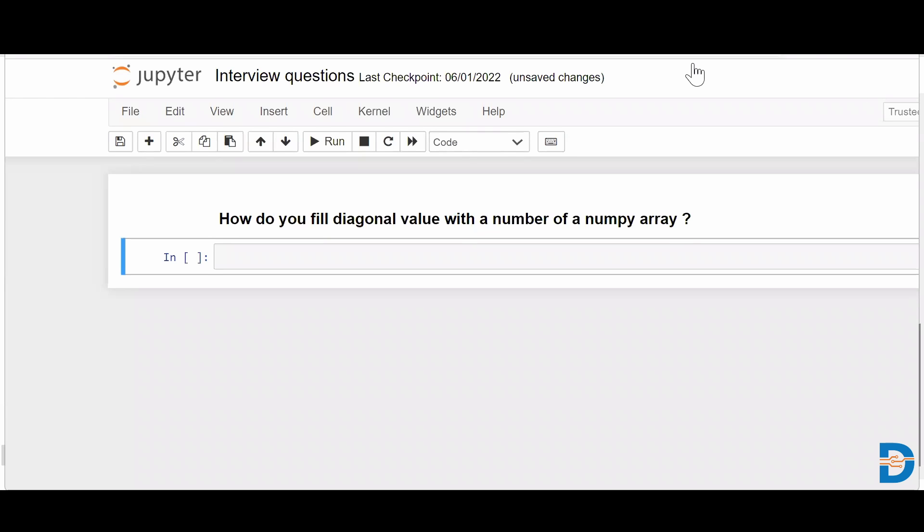Hello everyone, Nisarg here from Datamites. Today's NumPy interview question is how do you fill a diagonal value with a number of a NumPy array?